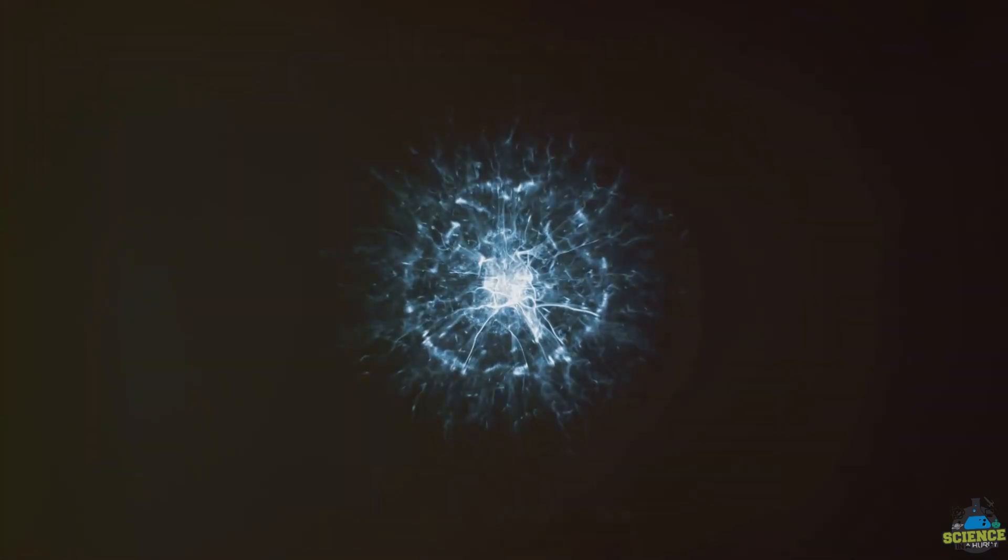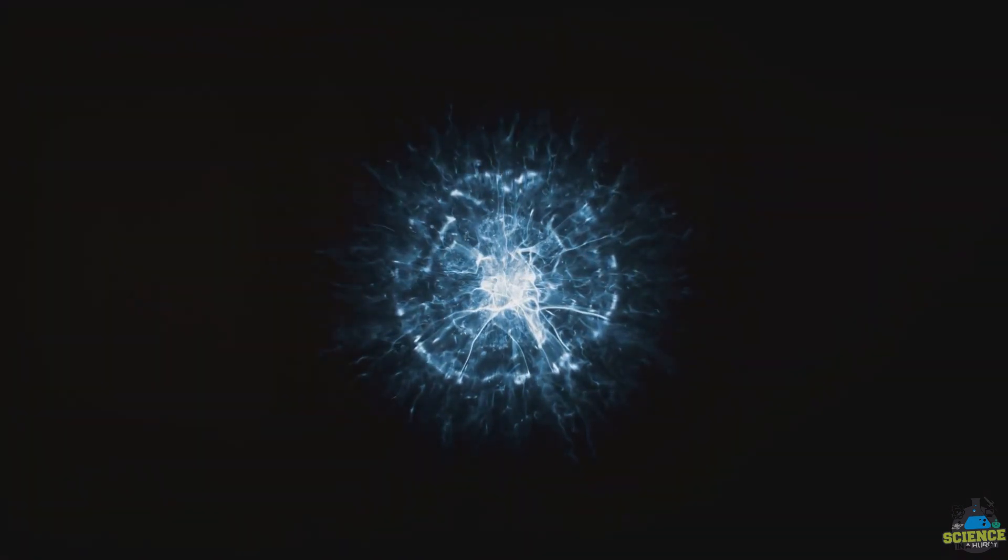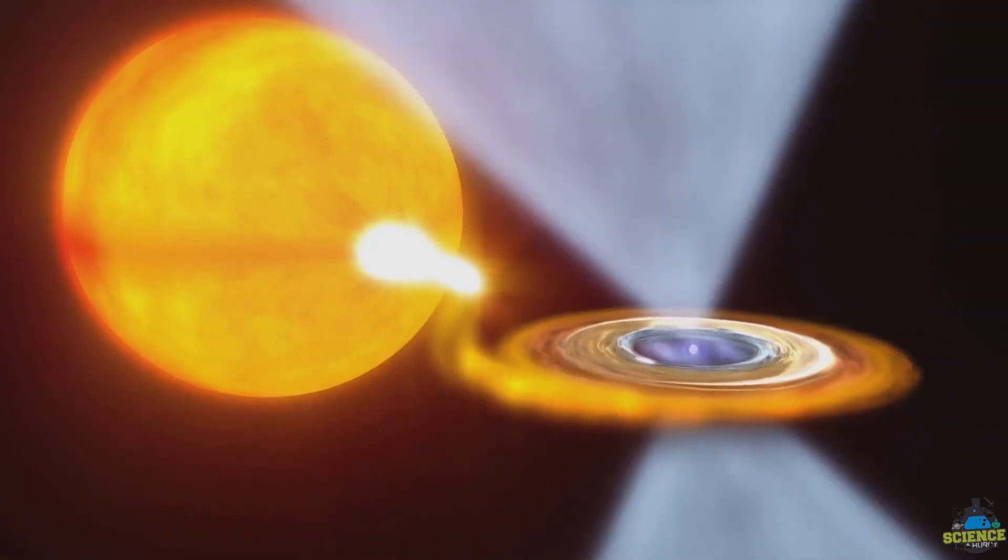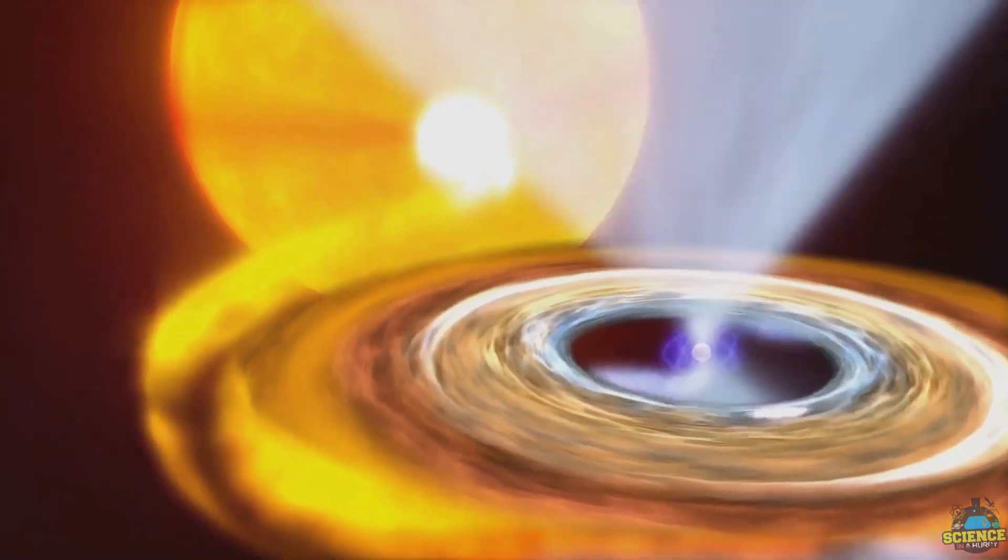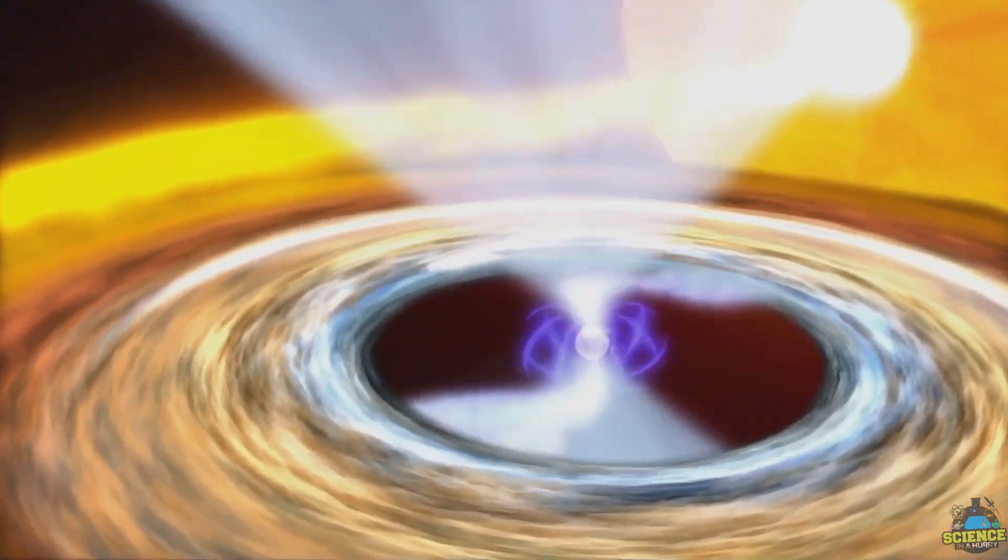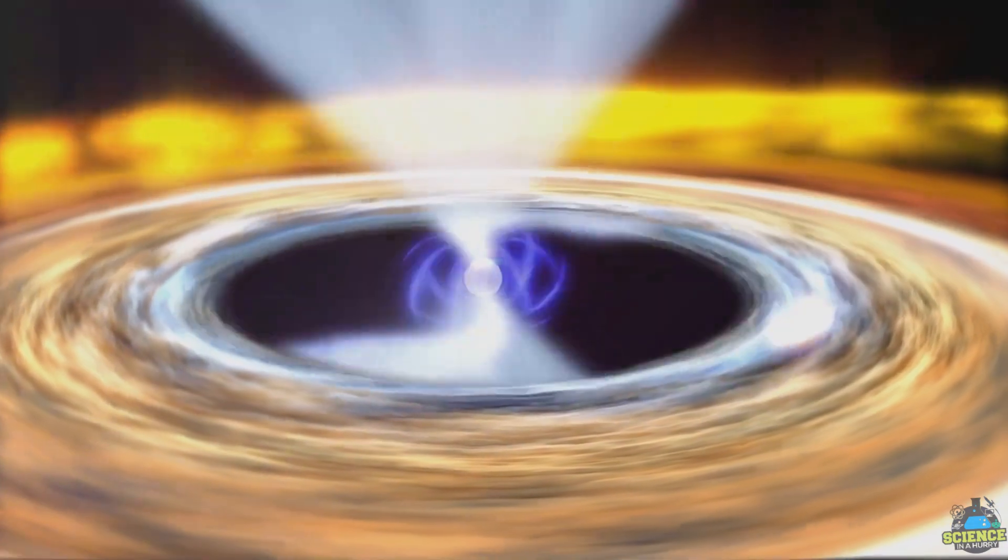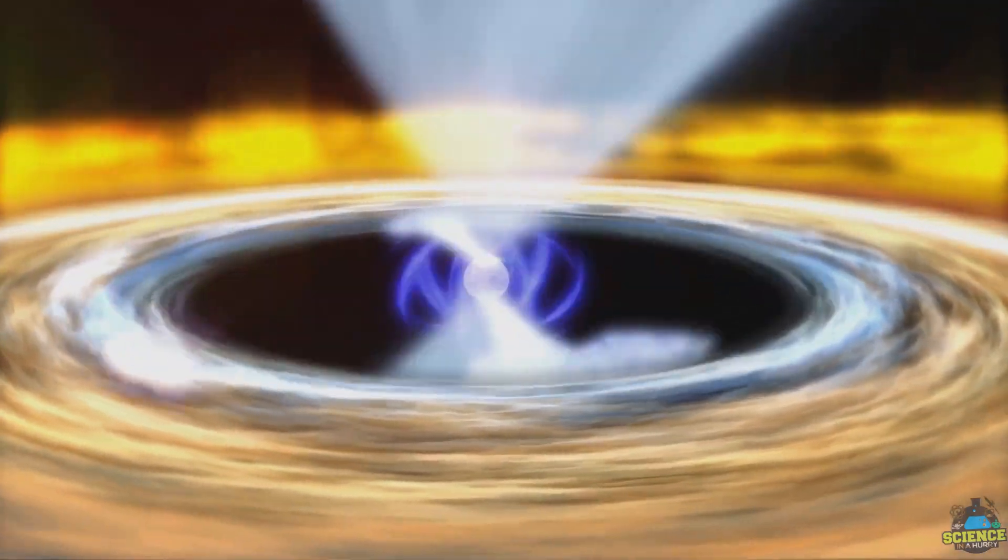A neutron star's density is immensely mind-boggling. Just a teaspoon of neutron star material weighs approximately a billion tons, which is akin to compressing an entire mountain into a compact coffee cup. Such is the extreme nature of these compact stars.